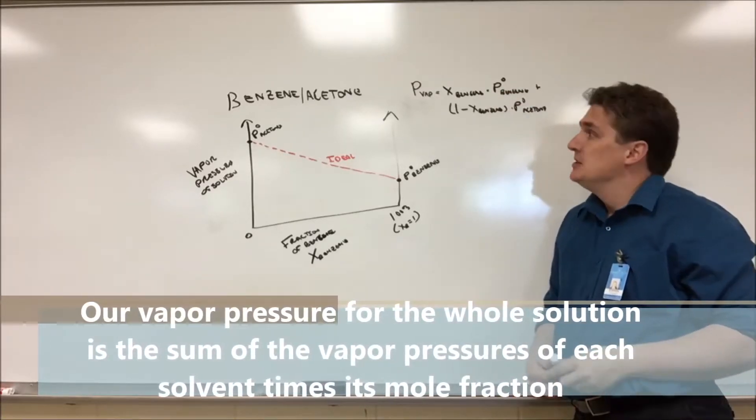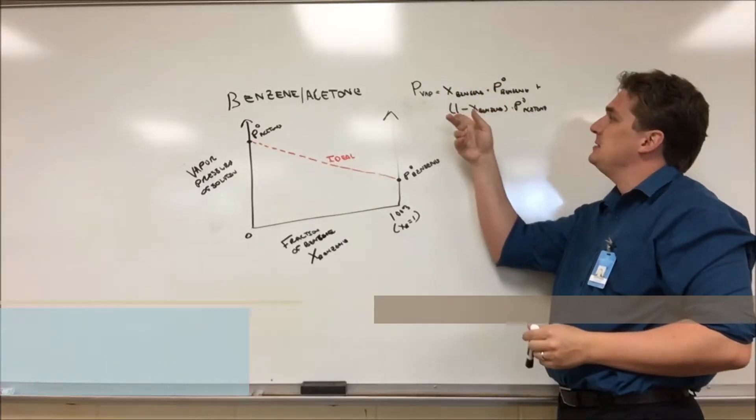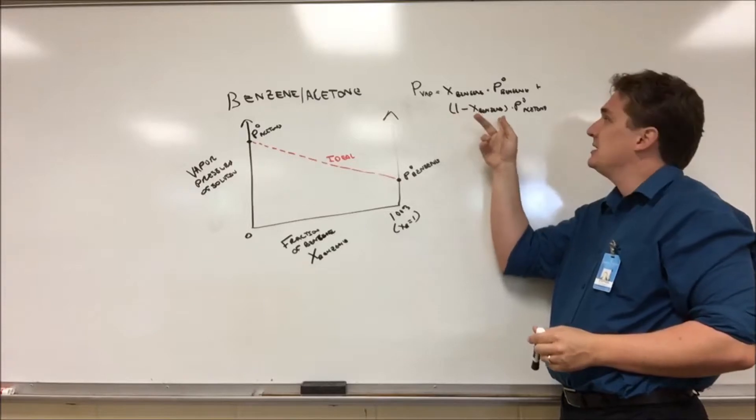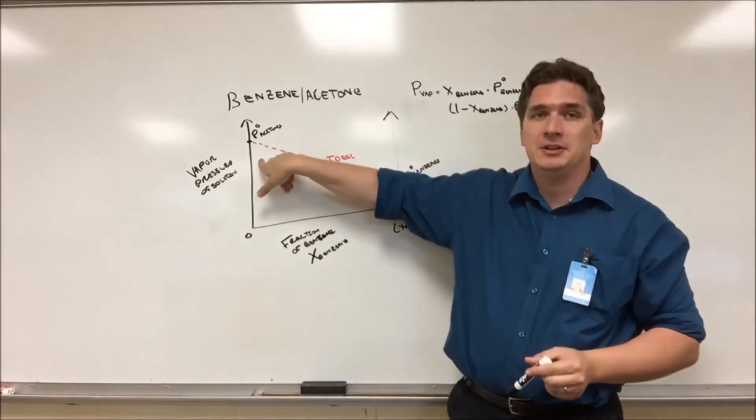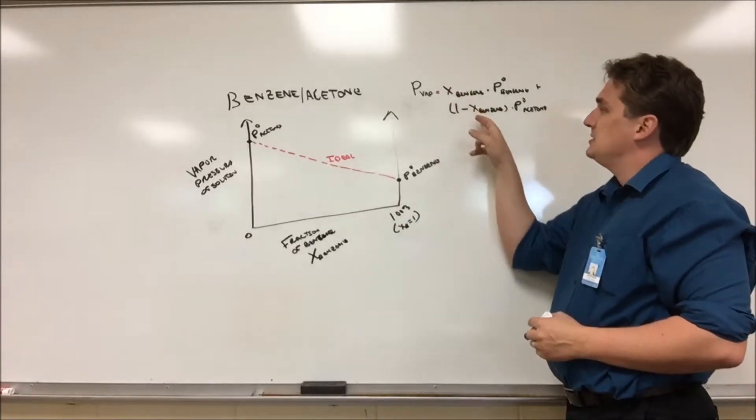So if we have no benzene, X is zero. This becomes zero times the vapor pressure of benzene plus one minus zero times the vapor pressure of acetone, which will give us this point here. If we have 100% benzene, we're gonna have one here and a zero here, so it's just gonna be the vapor pressure of benzene.